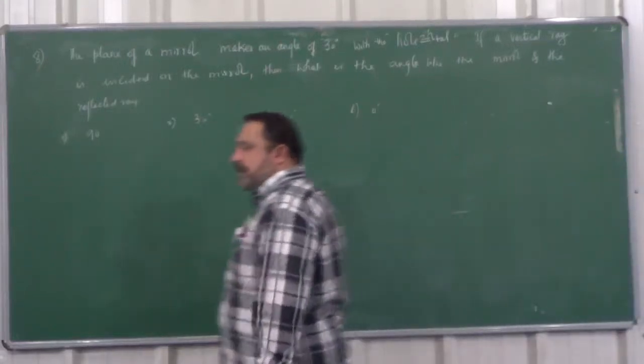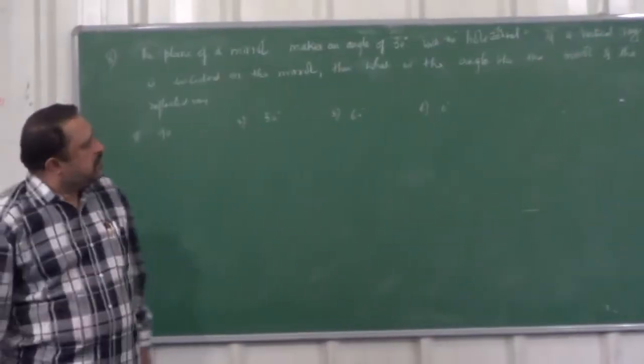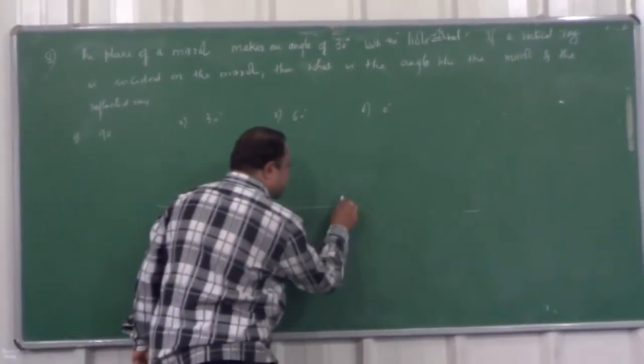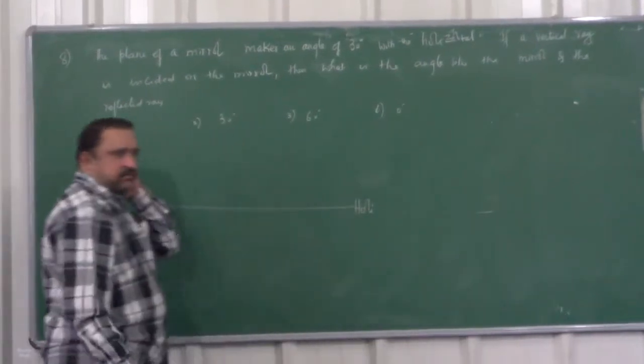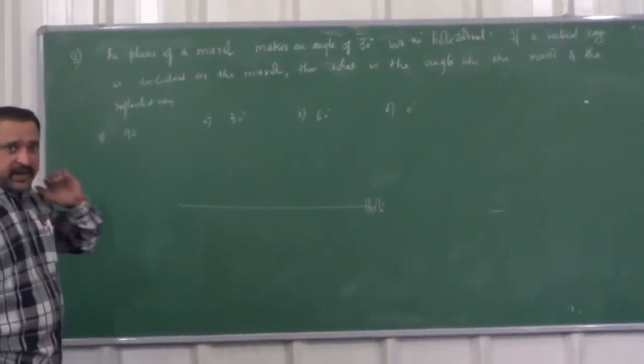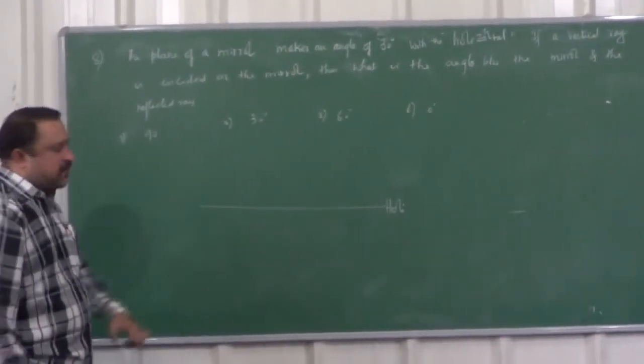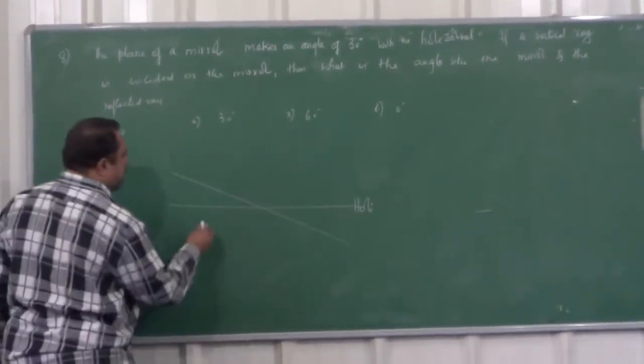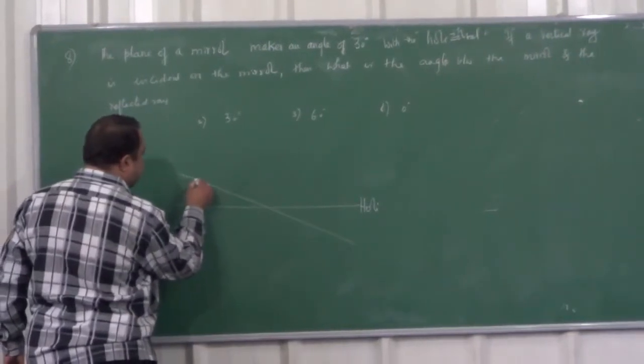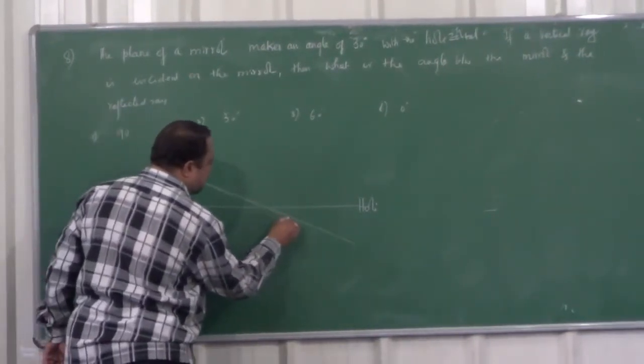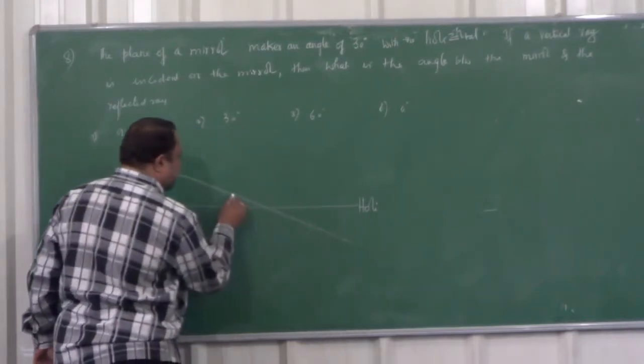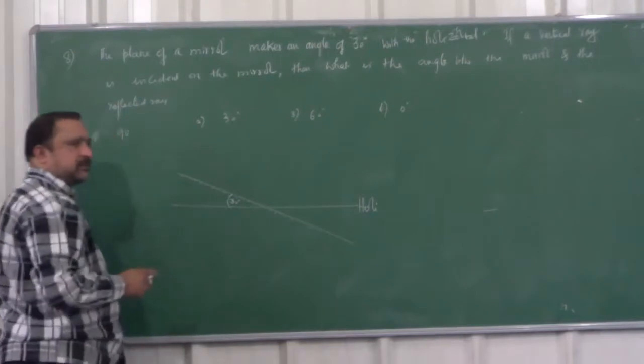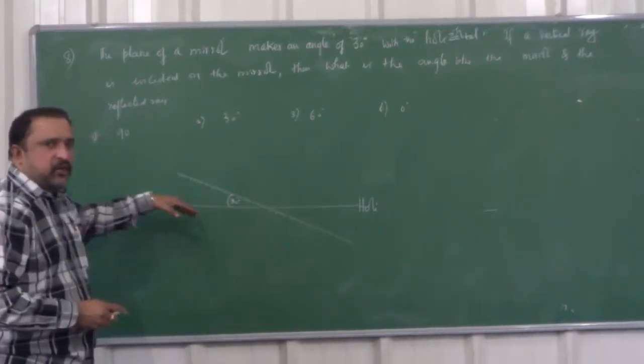A plane of a mirror makes an angle of 30 degrees with the horizontal. So it's first one in horizontal. So this is the horizontal line. And there is a mirror plane or a plane mirror which is making an angle of how much degree? 30 degrees. So this is the plane of the mirror. And this is 30 degrees. The angle between the plane and the horizontal.